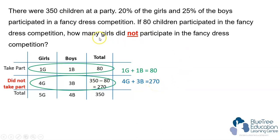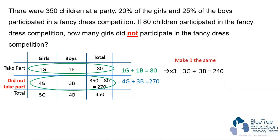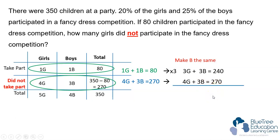Since we are looking for the number of girls, we don't need the boys. Rule number one: always make B the same, and when B is made the same, they will disappear. Multiply by 3, so the equation becomes 3G plus 3B equals 240. Transfer the other equation over for easy comparison. Draw a line — 4G minus 3G gives us 1G, and 3B minus 3B cancels off. So 1G is equal to 30.